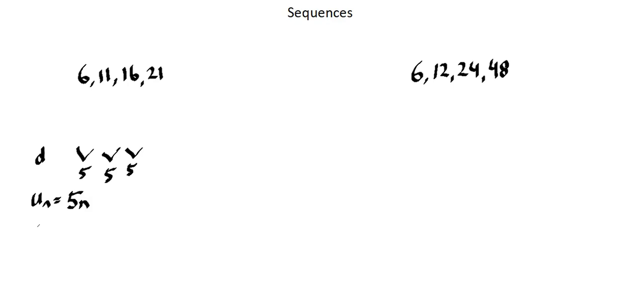Well if I test it, u of 1 would be 5 times 1 which equals 5, which isn't 6. And how different is it than 6? What am I missing? Well to get from 5 to 6 I need a plus 1.